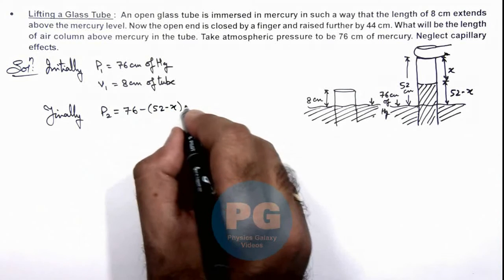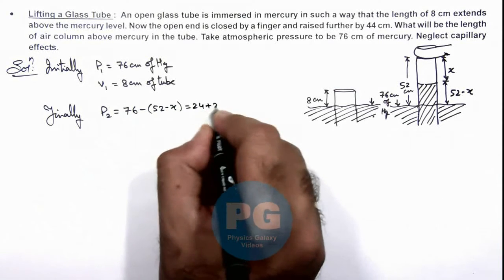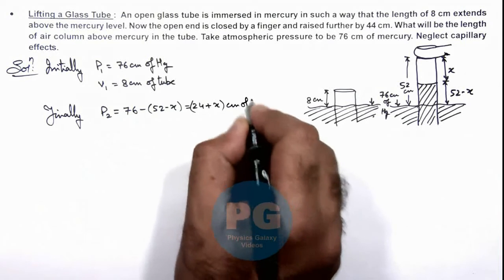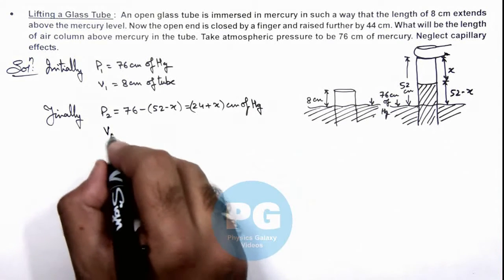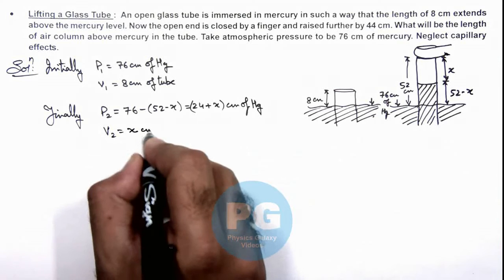That is equal to 24 plus x centimeters of mercury, which is the pressure of air inside the tube, and volume we can write as x centimeters of tube.